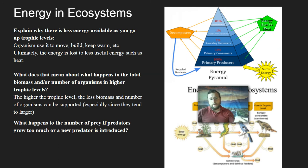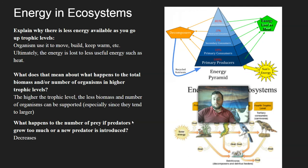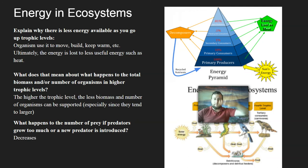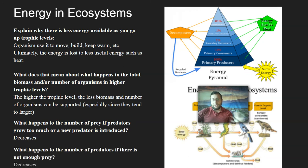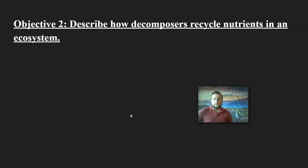What happens with prey if predators increase? If you have too many predators, you're not going to be able to support them with enough prey, so there's going to be less prey because they'll eat too much. But then if there's less prey, the predators will also die out and tend to decrease as well.